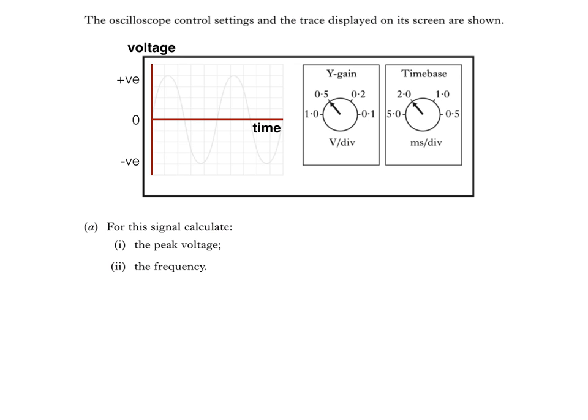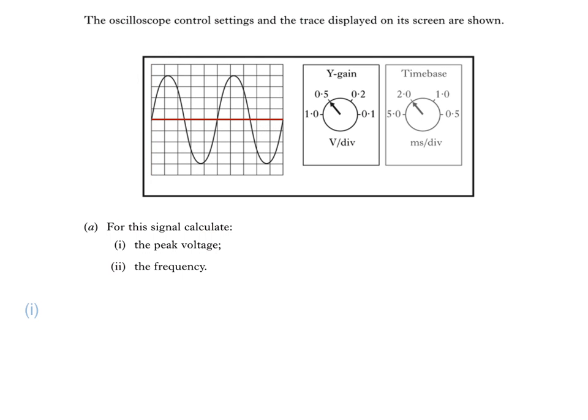Now we'll find the answer to part one of the question, to find the peak voltage of the trace. All we have to do is count the number of divisions from the midline, which I've coloured red, to the top of the trace, which is four divisions. We then multiply this by the y-gain setting, which is 0.5 volts per division. The y-gain setting is basically our scale on the y-axis. Our peak voltage then is 4 multiplied by 0.5, which equals 2 volts.